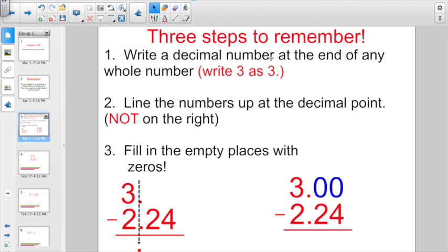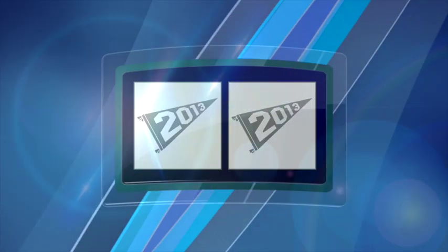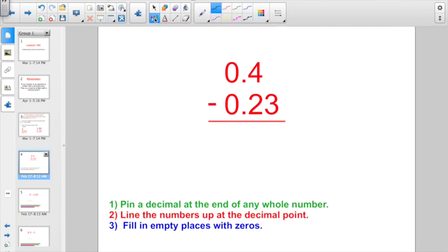Write a decimal number at the end of any whole number. If you add three, just pin a decimal point to the end of it. Step number two, line the numbers up at the decimal point, not on the right side. And today, especially since it's subtracting, fill in empty places with zeros. So, if you're trying to subtract three minus 2.24, this is how you want it set up. So, let's go ahead and jump right into it.